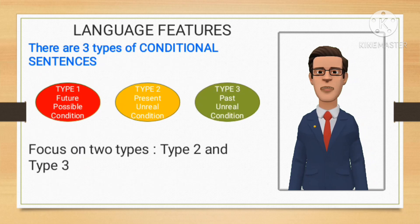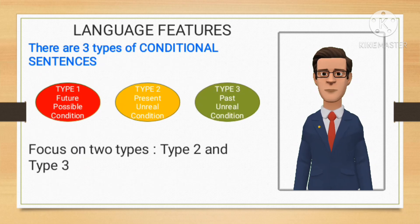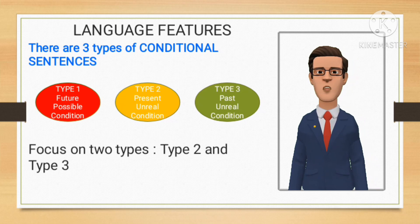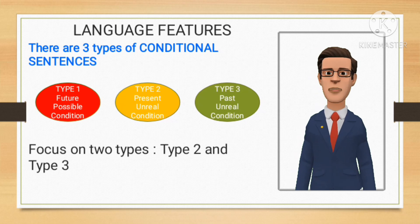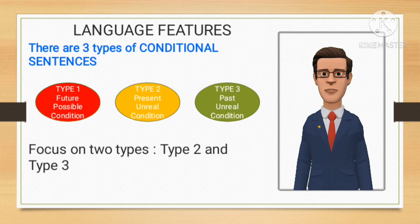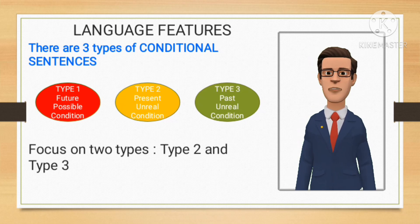Actually there are three types of conditional sentences: type 1, type 2, and type 3. Type 1 is usually called future possible condition. Type 2 is present unreal condition. And type 3 is past unreal condition. Today we only focus on type 2 and type 3, because you have already covered type 1 in 11th grade.